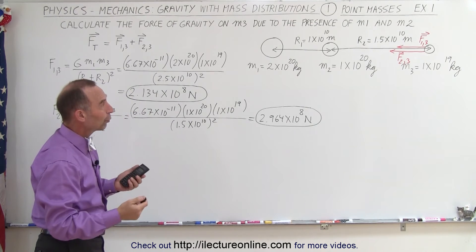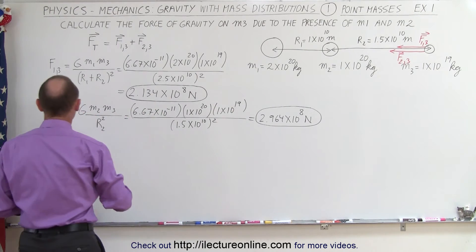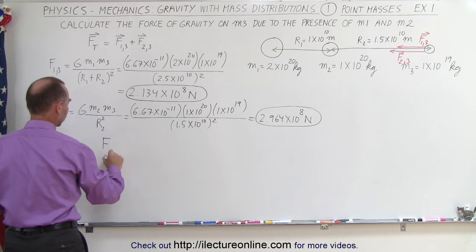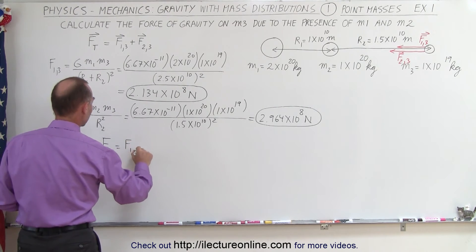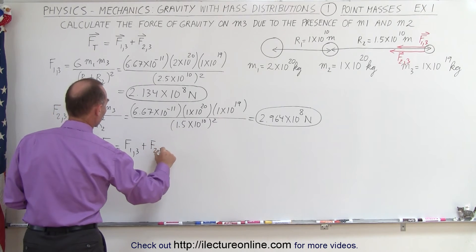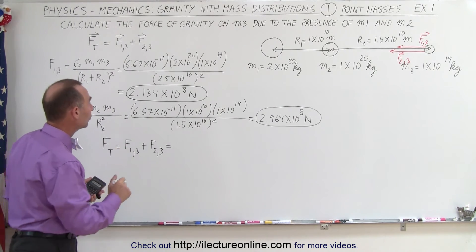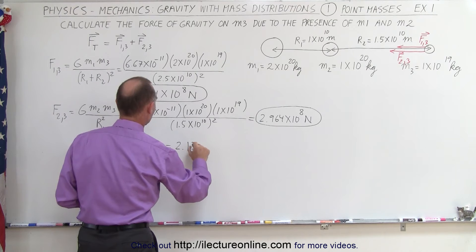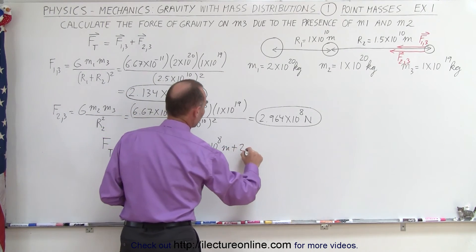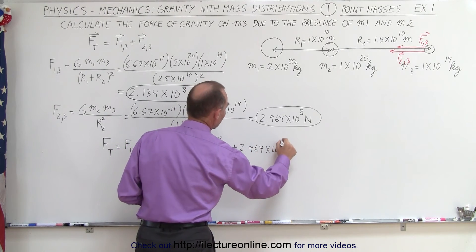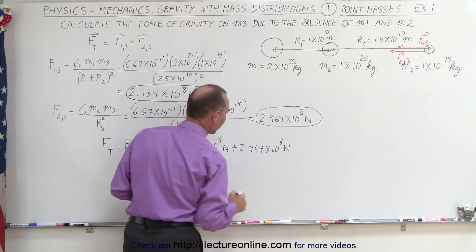So now we need to find the total force. And notice that since they're both pointing in the same direction, we can simply add the magnitudes. So that means that f total, the magnitude of that, is simply equal to f13 plus f23. Notice that the magnitudes of vectors cannot be negative; we're just finding the magnitude. So here we have 2.134 times 10 to the 8 plus 2.964 times 10 to the 8. Now that should not be meters but newtons of course, that's a force.